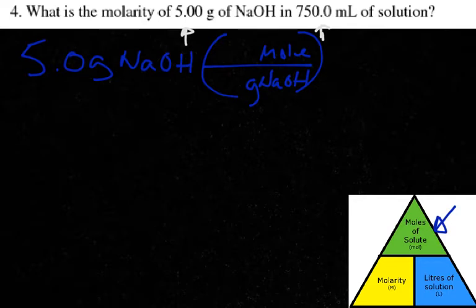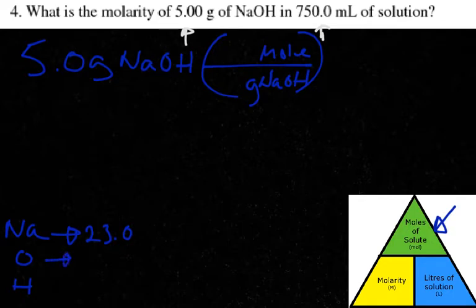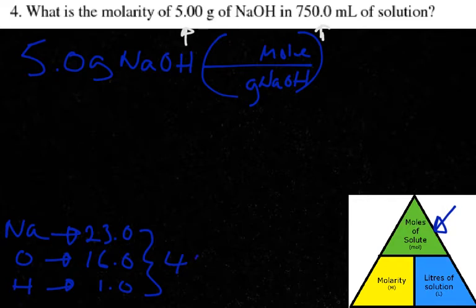So, simply, we'll calculate GFM over here. We have Na, we have O, and we have H. The mass of Na is approximately 23.0. The mass of oxygen is approximately 16, and H is 1. 23 plus 16 gives us 39, and 1 gives us 40. So, all these guys added together gives us a GFM of 40 grams. 40 grams per mole.